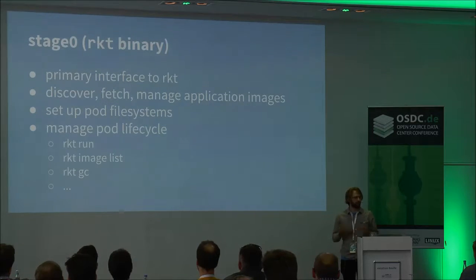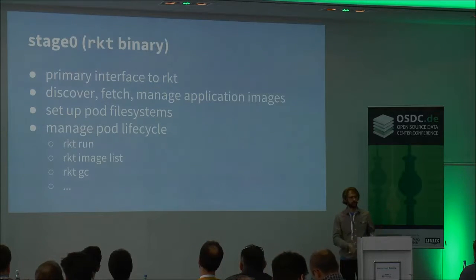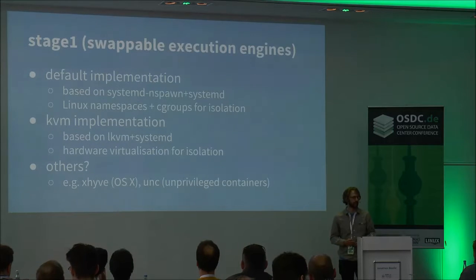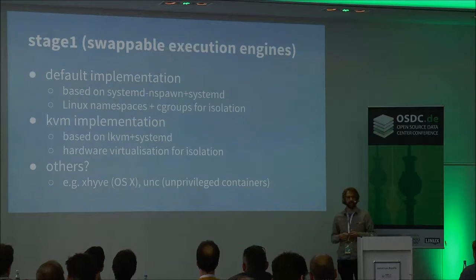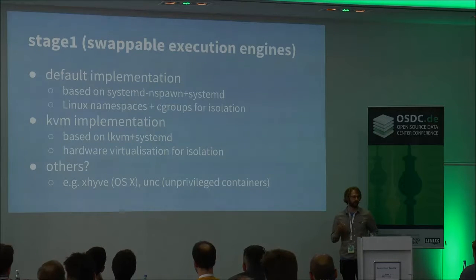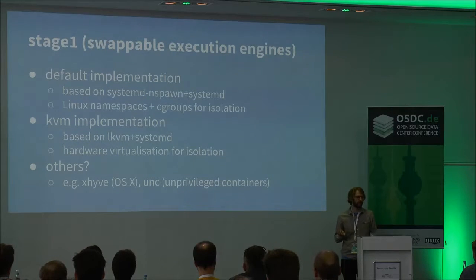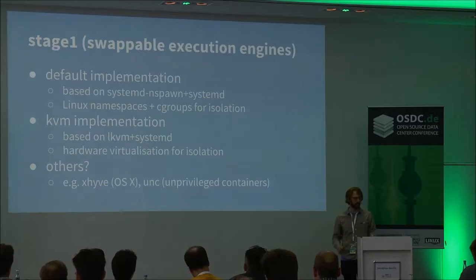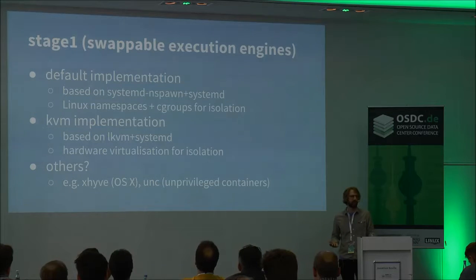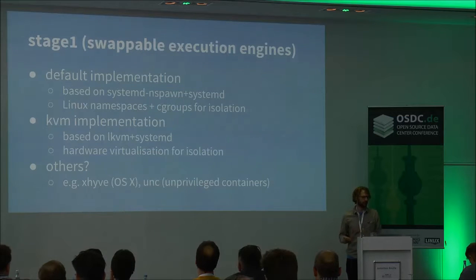Stage 0 does all the basic things you'd expect a container runtime to do: it can fetch images, discover them over the internet, set up the file system on disk, list images in your local store, garbage collect old pods, and things like that. Stage 1 is where all the interesting stuff happens — that's where the pod gets executed. Our default implementation is based around classic Linux containers, cgroups, and namespaces, and to do that we use systemd-nspawn. We also have a first-class implementation based around KVM, contributed by folks at Intel, using LKVM — a user space virtualization tool that spins up a VM very quickly and allows a pod to execute in that VM, giving you hardware isolation.